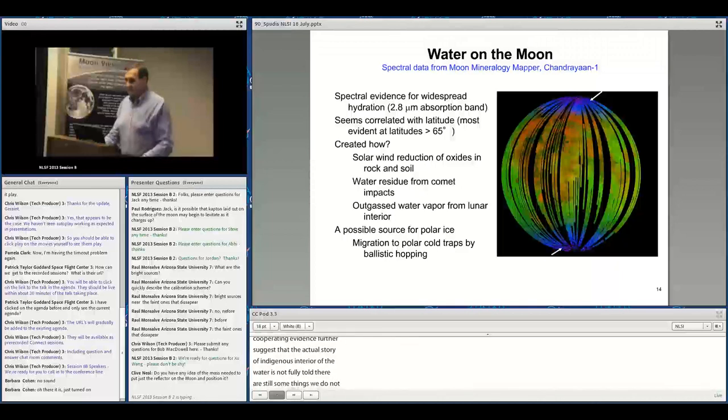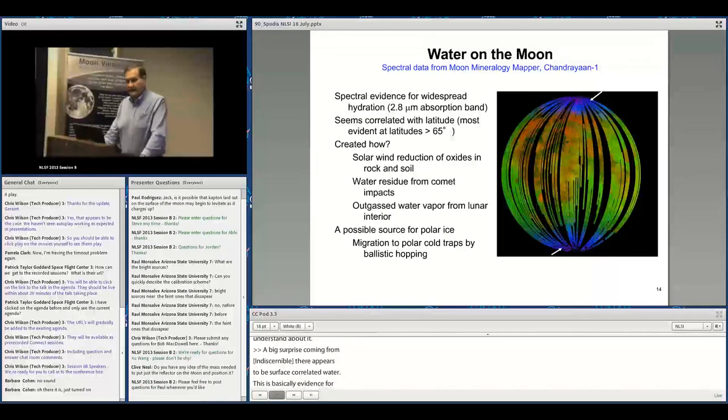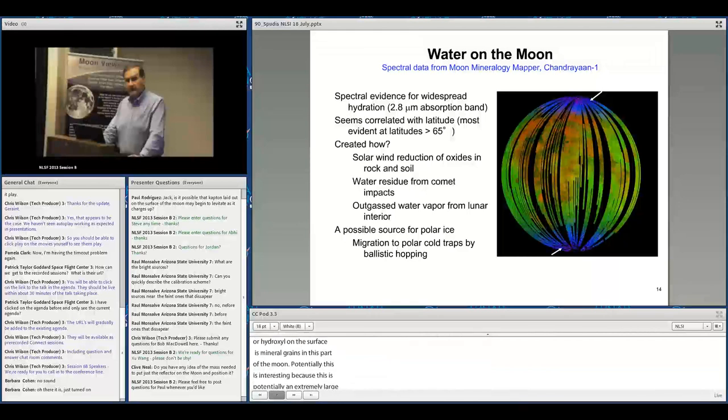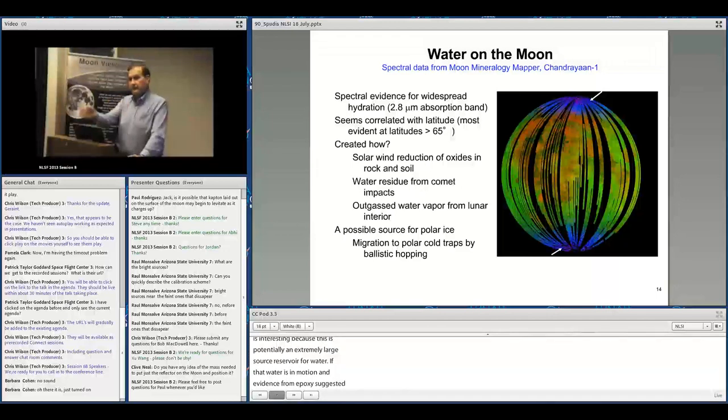The big surprise from M³ on Chandrayaan was surface correlated water—evidence for a 2.8 micron absorption band beginning at about 65 degrees latitude at both poles, increasing poleward. This is evidence for fine grain or monolayer of water or hydroxyl on mineral grain surfaces. Evidence from EPOXI and Cassini suggests it's in motion, moving during the coolest parts of the day toward cooler latitudes, randomly hopping toward the poles.